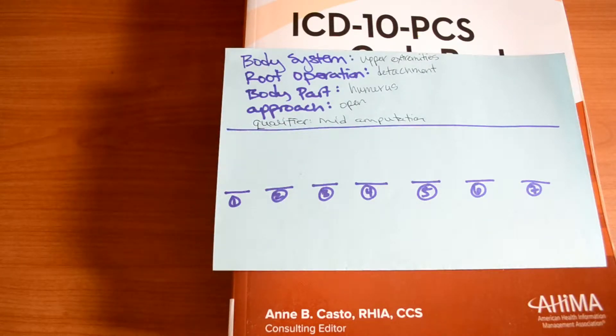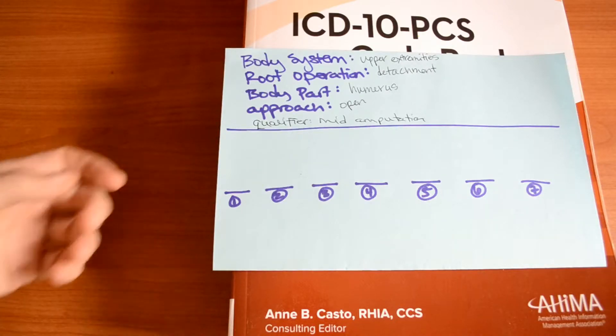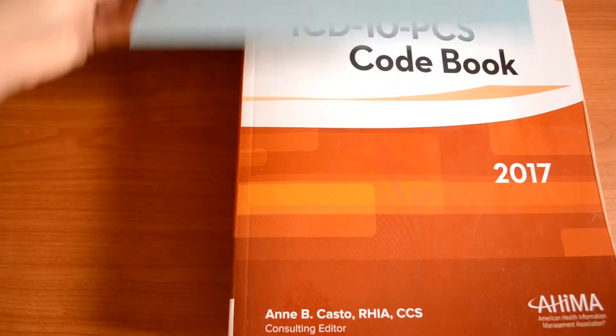Look for detachment, and then go down and look for humerus or more broadly the arm or upper arm. And that will direct you to the correct body system, the correct chapter, and the correct table. But we will go right to the body system chapter.